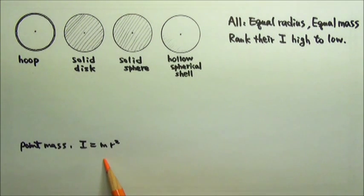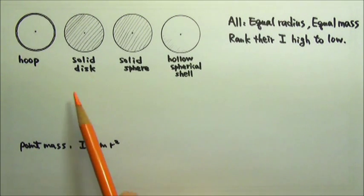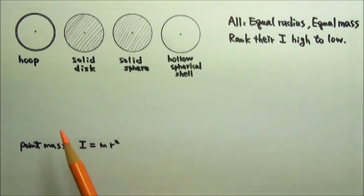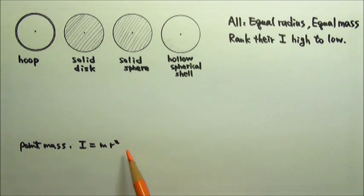The rotational inertia for a point mass is I equals mr squared. But these objects are not point mass, so we cannot use this equation directly to find their rotational inertia. However, we can use this idea to help us analyze things qualitatively.